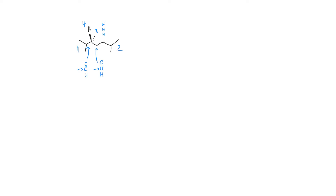So now I can do some counting: 1, 2, 3. I can observe that the hydrogen is pointed towards me. So normally my count 1, 2, 3 is to the left, which would assign S. Normally that would be correct, but if the hydrogen is towards you instead of away from you, we need to reverse our assignment. So this is R.